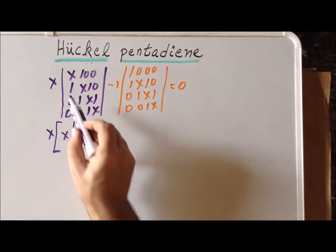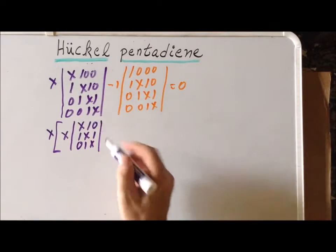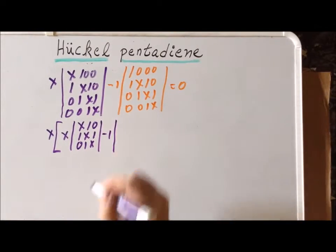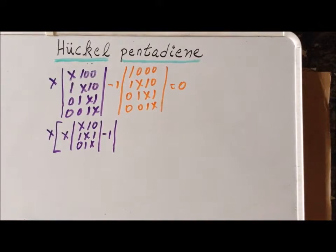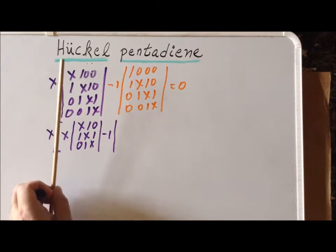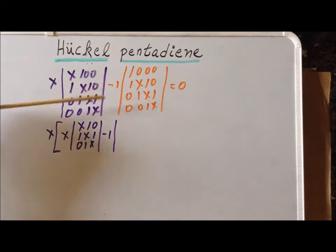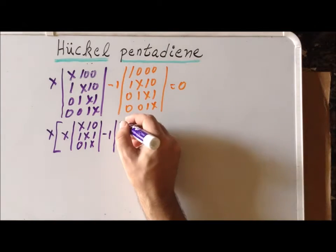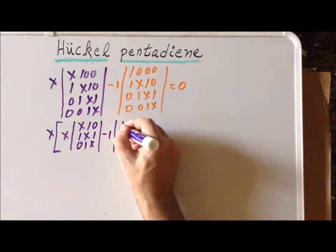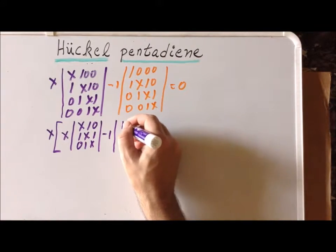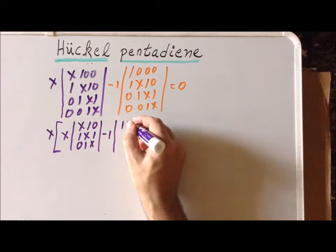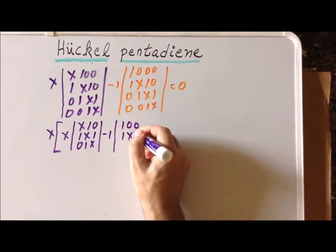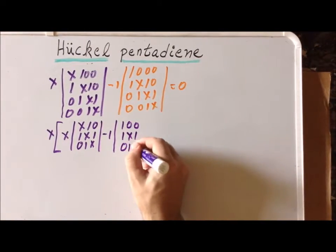Our second coefficient is minus 1, since we alternate signs. We use the determinant formed by removing the first column and the second row, giving entries: 1, 0, 0, 1, x, 1, 0, 1, x.